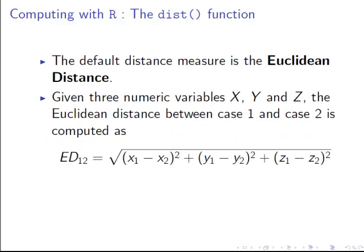The default distance measure for this function is the Euclidean distance, which is straightforward enough. You might recognize it from trigonometry in school. Given three numeric variables, the Euclidean distance between cases 1 and 2 is computed as ED for Euclidean distance, subscript 1, 2 for cases 1 and 2.